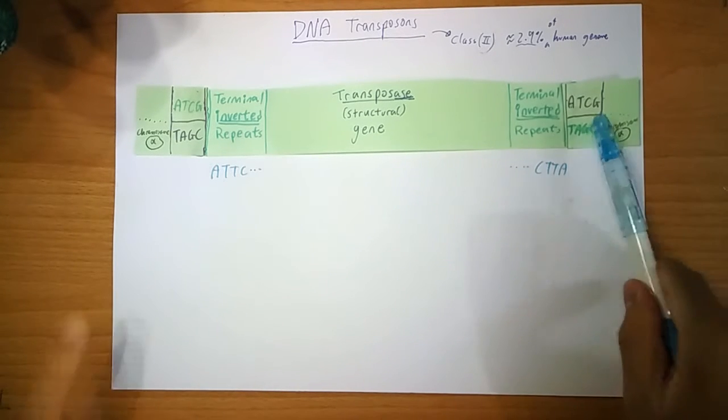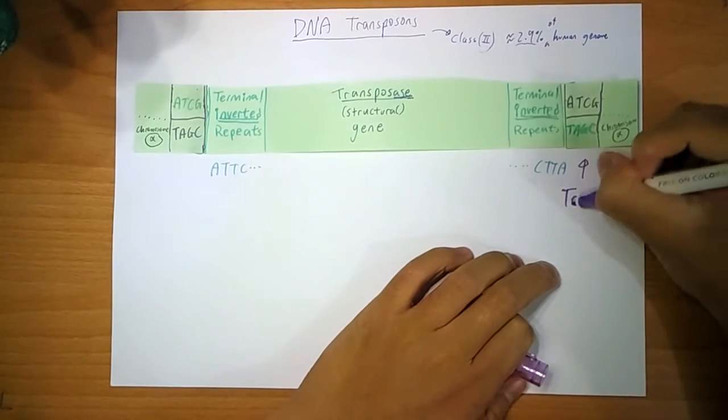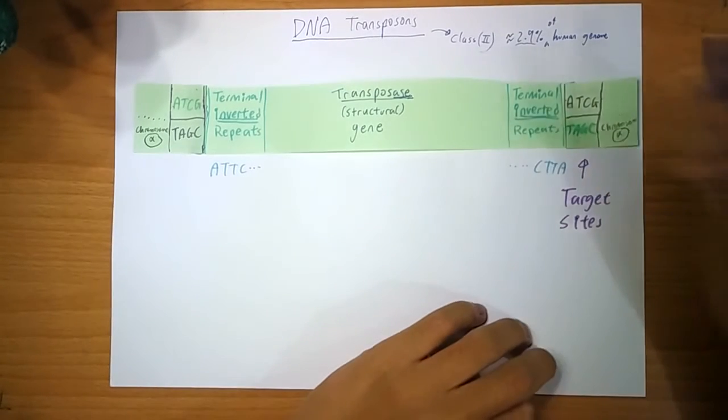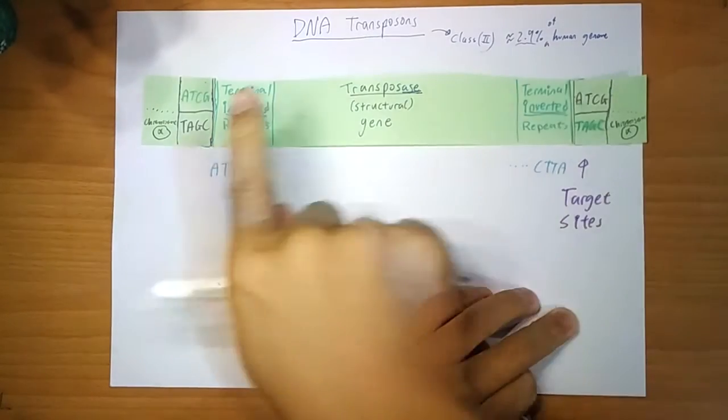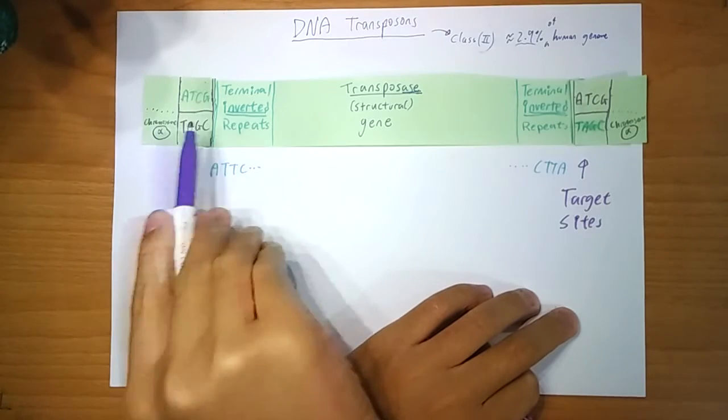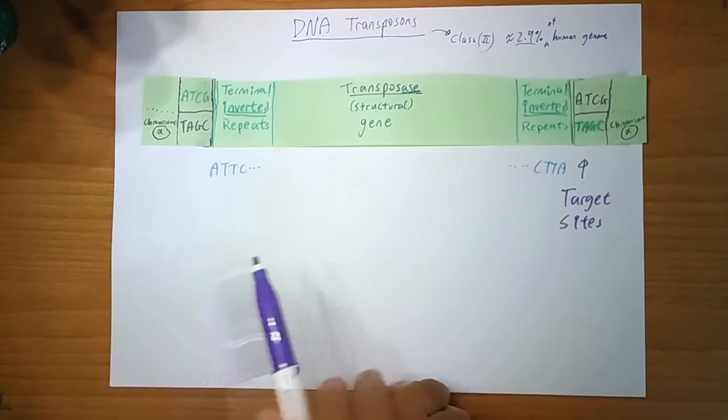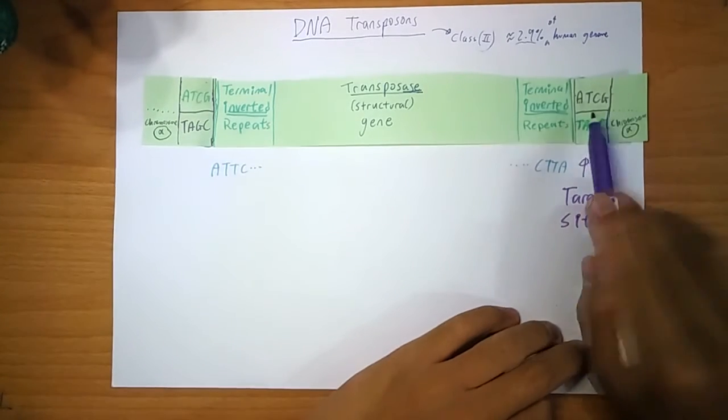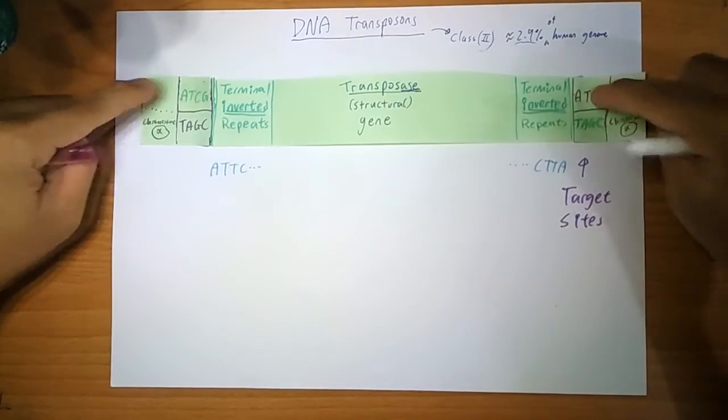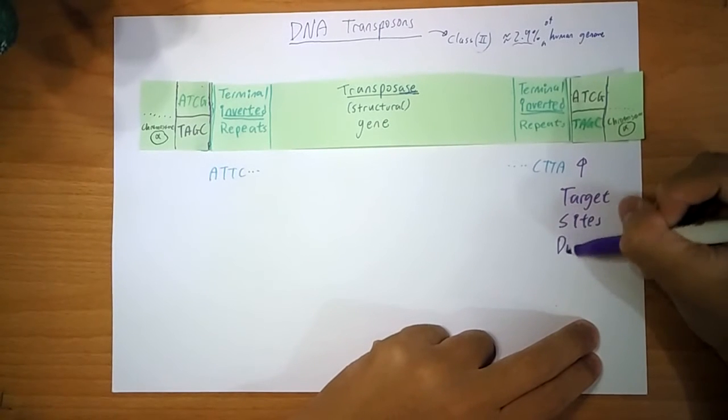And this over here, the purple color thing, are your target sites. So, target sites, target for your enzyme transposase. And because it appears on both ends, and they're direct repeats, which is A, T, C, G on one strand, this is just an example. I'm not sure if there are real enzymes that have that target site. But A, T, C, G on one strand, on the other strand, it's also A, T, C, G. On the other side. So it is a direct repeat, that's why we call it target site duplications, TSD.